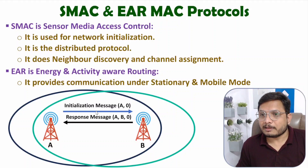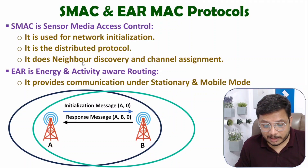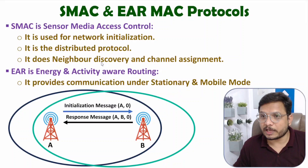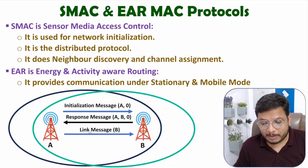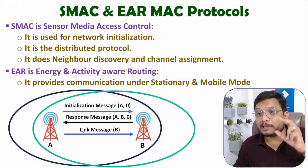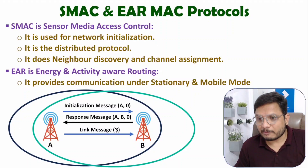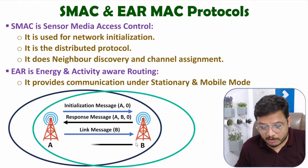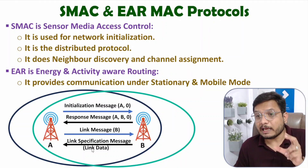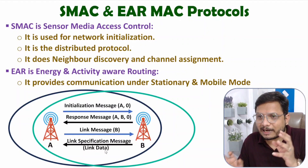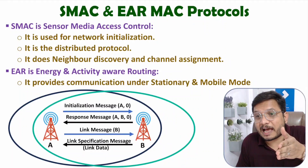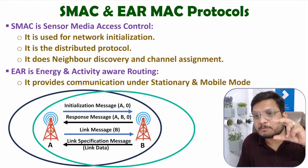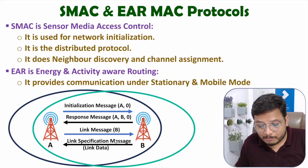Now for channel assignment, A has already done neighbor discovery and knows it is in contact with B. A forwards a link message to B saying it wants to establish a link. In response, B forwards a link specification message specifying the data rate for communication, or stating the distance and how much transmission power A should use. This is how SMAC performs neighbor discovery and channel assignment.